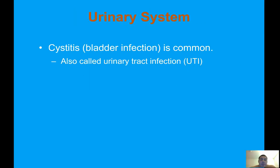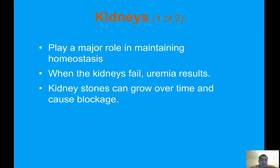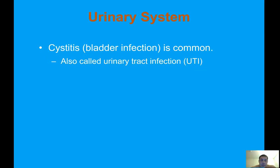Urinary system: cystitis, or bladder infection, is common and also called a urinary tract infection, or UTI. Common symptoms include difficulty urinating, frequent urination, and cloudy or dark urine. Ask the patient whether their urine looks clear or cloudy.